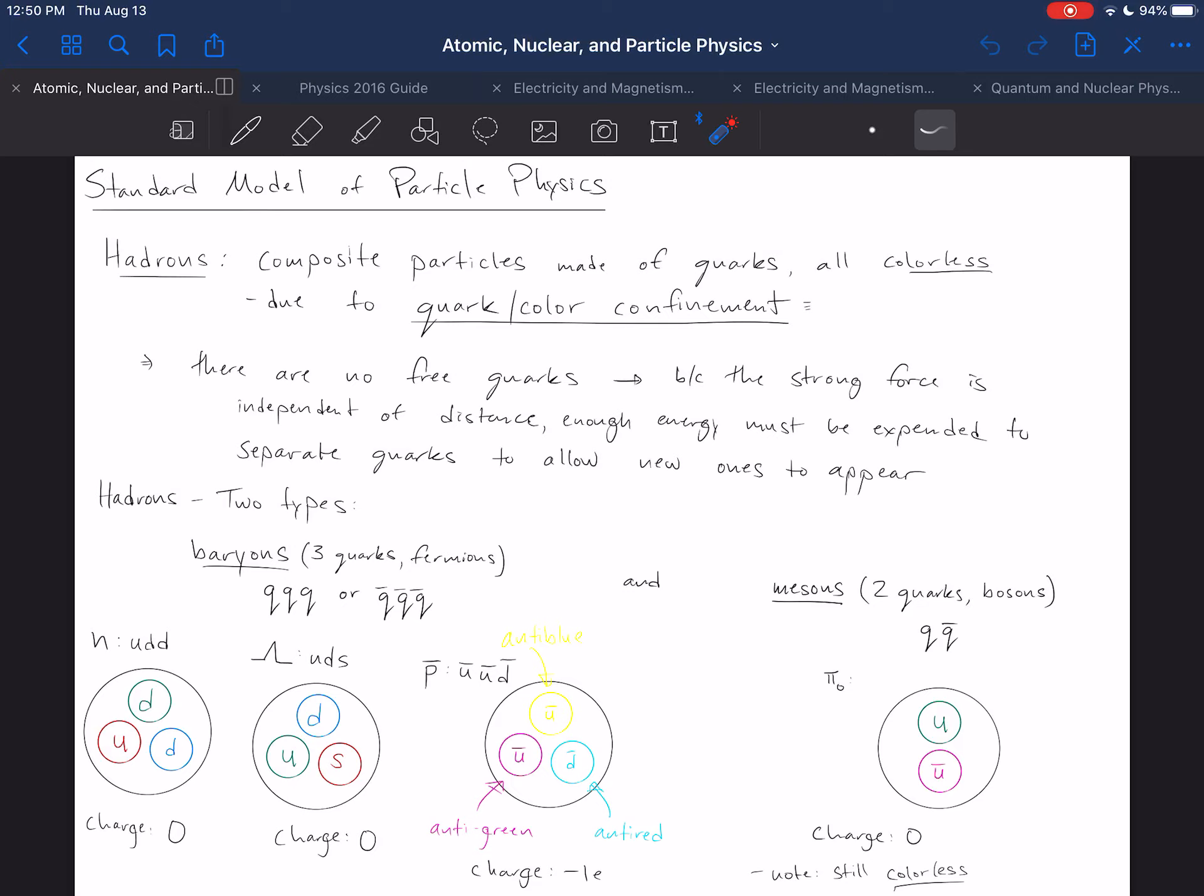There are also recently discovered particles known as pentaquarks, but they are so recently discovered that they are not even in our syllabus, which I think is an interesting fact. So there may be, as it turns out, more ways of acquiring hadrons or assembling hadrons, but by far the two most common are baryons and mesons.